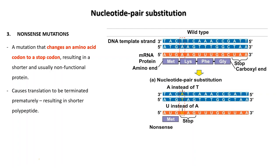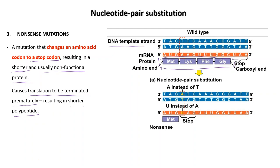For nonsense mutation, it is a mutation that changes an amino acid codon to a stop codon, resulting in a shorter and usually non-functional protein. Nonsense mutation causes translation to be terminated prematurely, producing a shorter polypeptide. For example, if nonsense mutation changes the second mRNA codon from AAG to UAG, translation is terminated at that point. The three types of stop codons are UAA, UAG, and UGA.